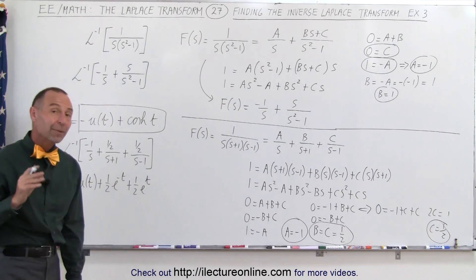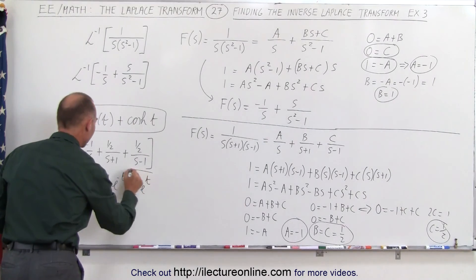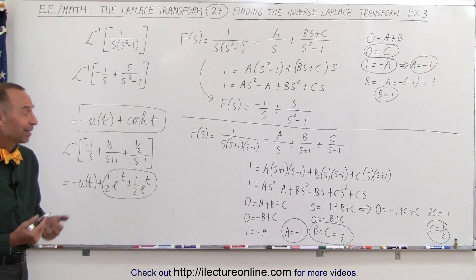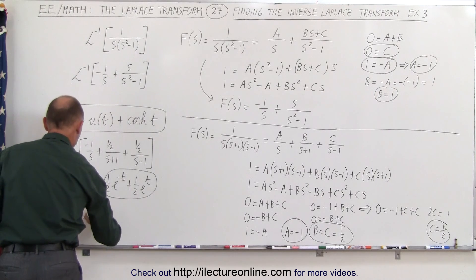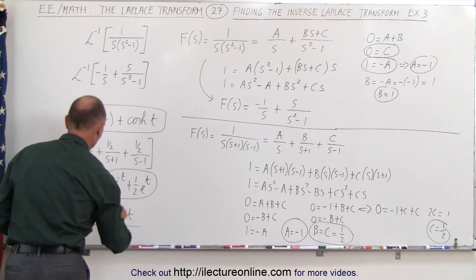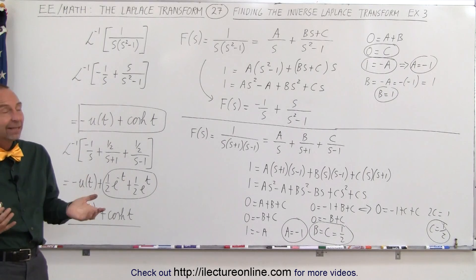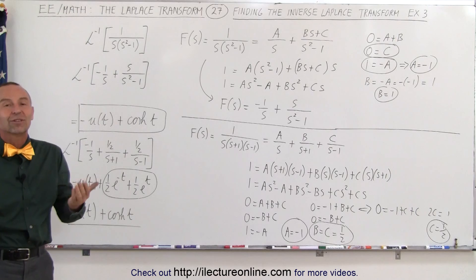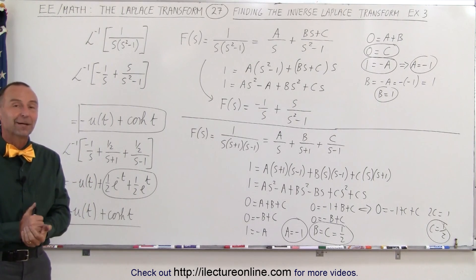At first it appears as if we did not get the same answer. However, one half times e to the minus t plus one half times e to the plus t is exactly the definition of the hyperbolic cosine of t. Therefore this simplifies to minus u(t) plus cosh(t), the exact same answer as before. Either way, you get the same result. It's probably easier to do it the first way, but you can see there are different valid approaches to the very same problem.